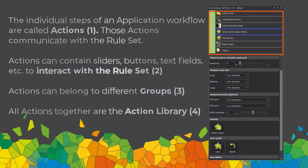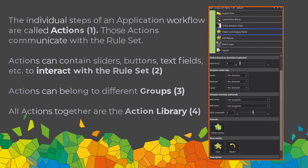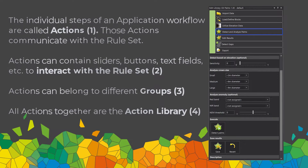You can group actions into different groups. If you have multiple actions and want to save them, that is saved as an action library. The action library is a collection of all the actions defined in the application. Those actions can be grouped, and you have widgets which communicate with the rule set in the background. In a nutshell, an Architect application is a simplified user interface which hides the complexity of a rule set and uses those actions to communicate with the rule set.